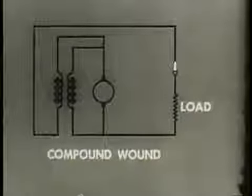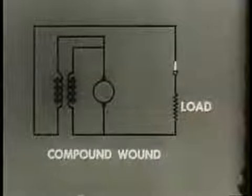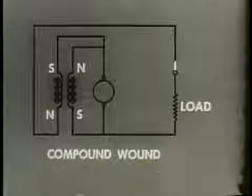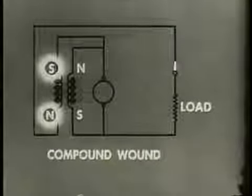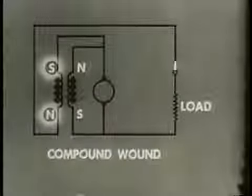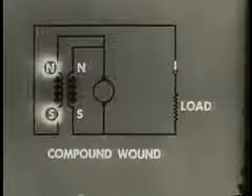By changing the armature winding, a compound-wound generator results, which combines the best features of both the series and the shunt-wound generator. When windings are arranged so that magnetic fields oppose each other, it becomes, in effect, a series generator — used only where constant current is the prime requirement, such as in arc welding. By changing the magnetic polarity of one of the fields, the field windings aid one another. As a result, this compound-wound generator has good voltage and fair current regulation.